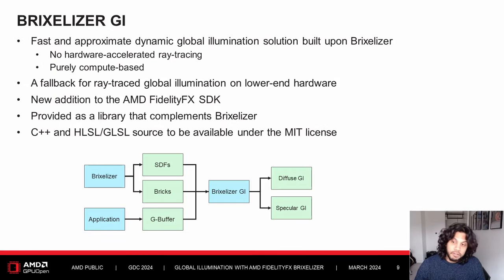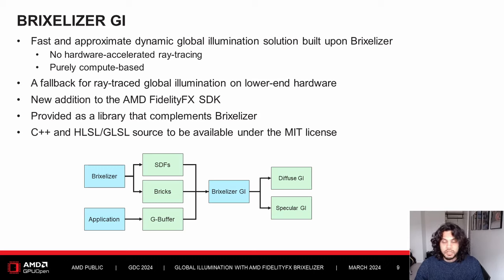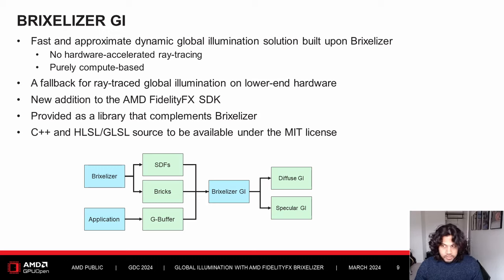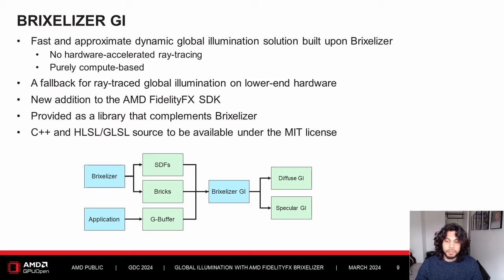Now let's look at Brixelizer GI, which is a fast and approximate global illumination solution built on top of Brixelizer. It's entirely based in compute without any need for hardware-accelerated ray tracing. The main motivation is to provide a fallback for ray-traced GI so that lower-end hardware can also have a form of dynamic global illumination. This will be available as part of the next FidelityFX SDK release as a library that complements Brixelizer.